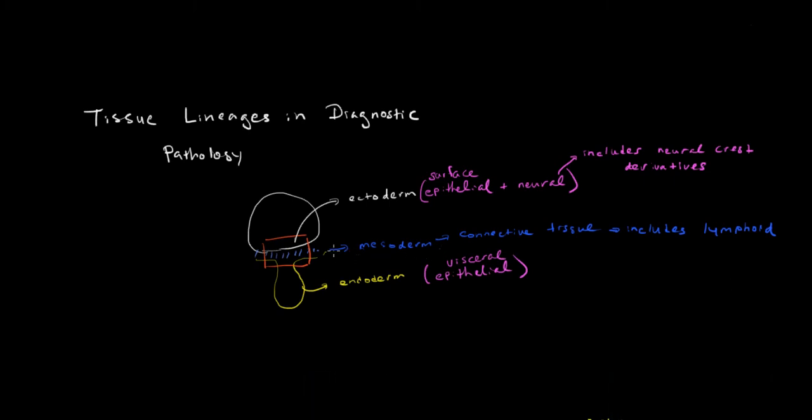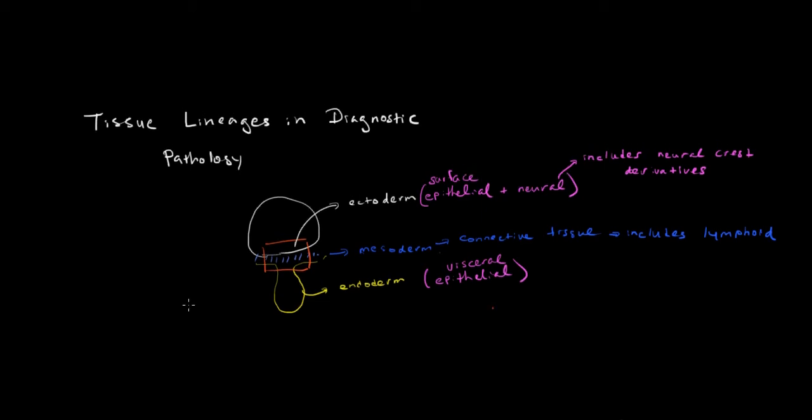Hello, this is David. And in this installment, I'm going to talk about a question that I'm frequently asked by early trainees in pathology. The question they usually ask is, how does one use immunoperoxidase markers to determine the lineage, the tissue lineage of something?